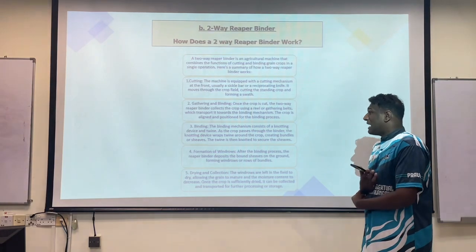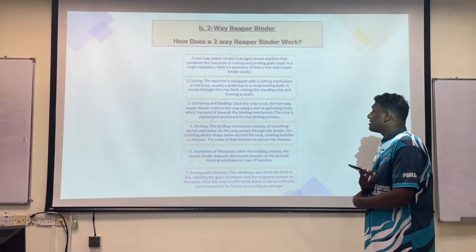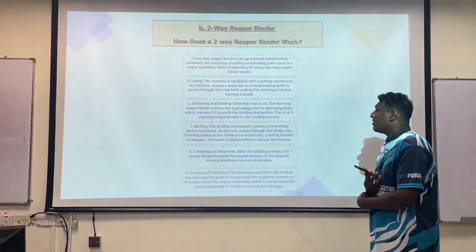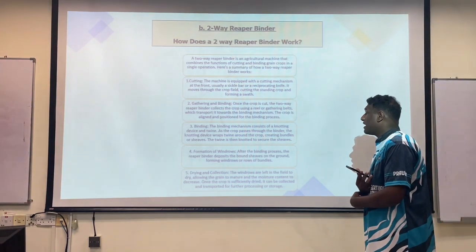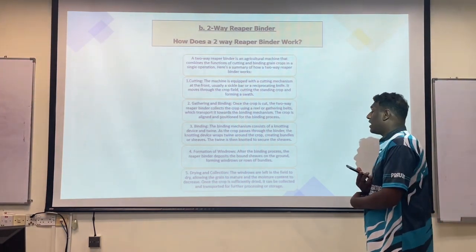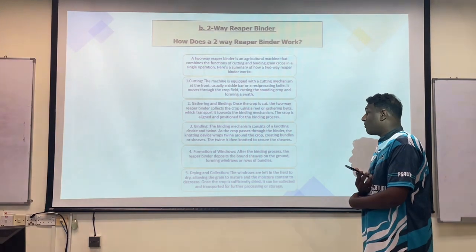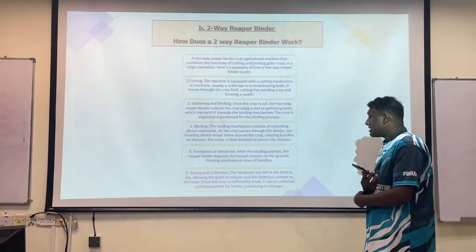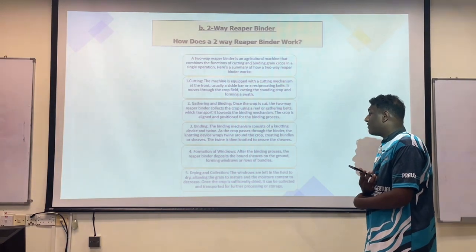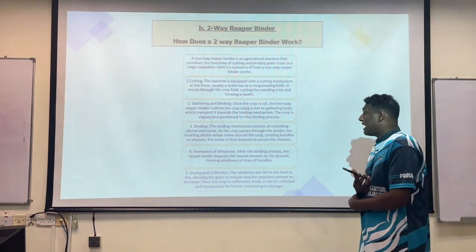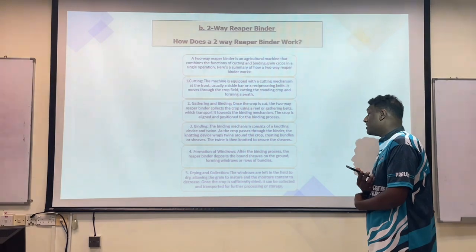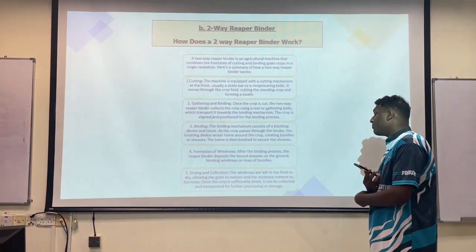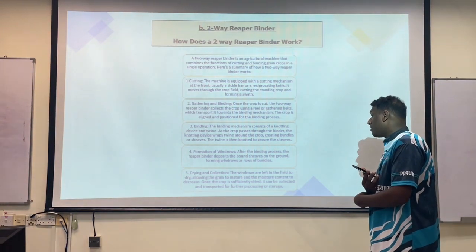Thirdly, binding: the binding mechanism consists of a knotting device and twine. As the crop passes through the binder, the knotting device wraps twine around the crop, creating bundles or sheaves. Fourthly, formation of windrows: after the binding process, the reaper binder deposits the bound sheaves on the ground, forming windrows or rows of bundles. Lastly, drying and collection: the windrows are left in the field to dry, allowing the grain to mature and the moisture content to decrease.